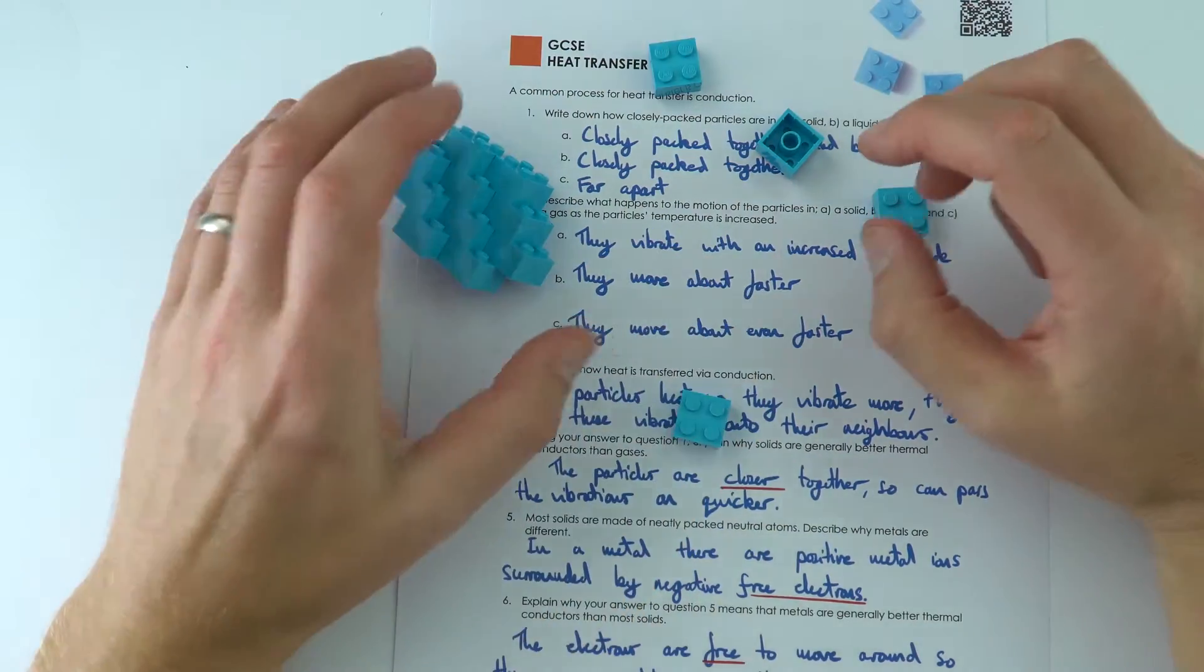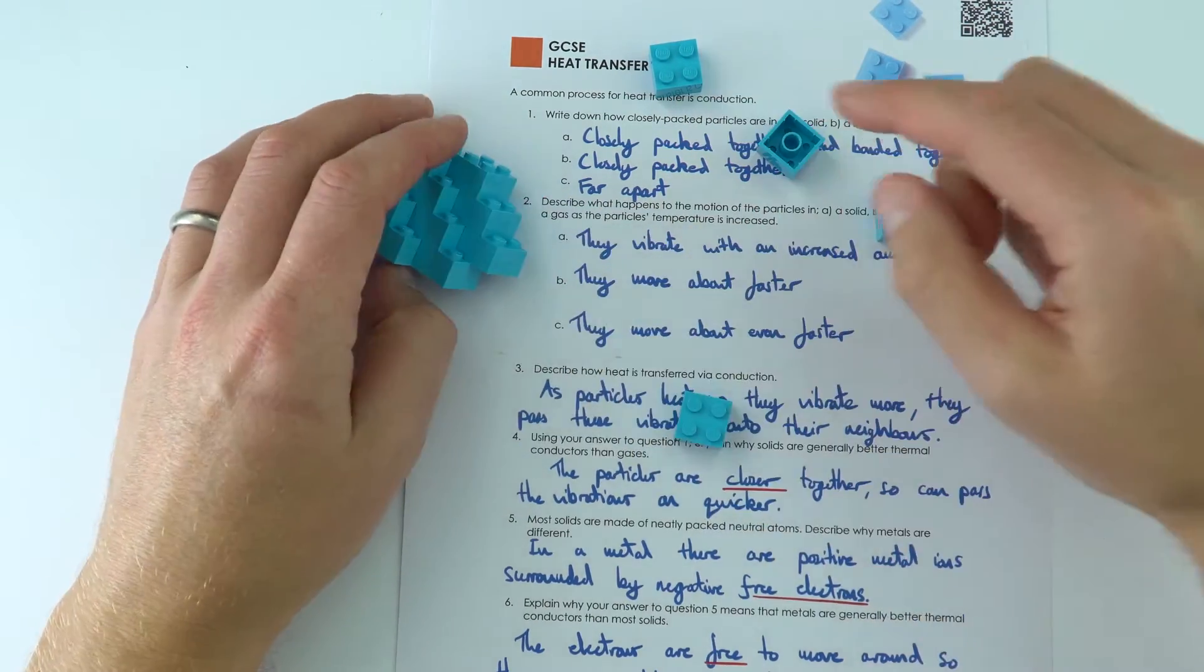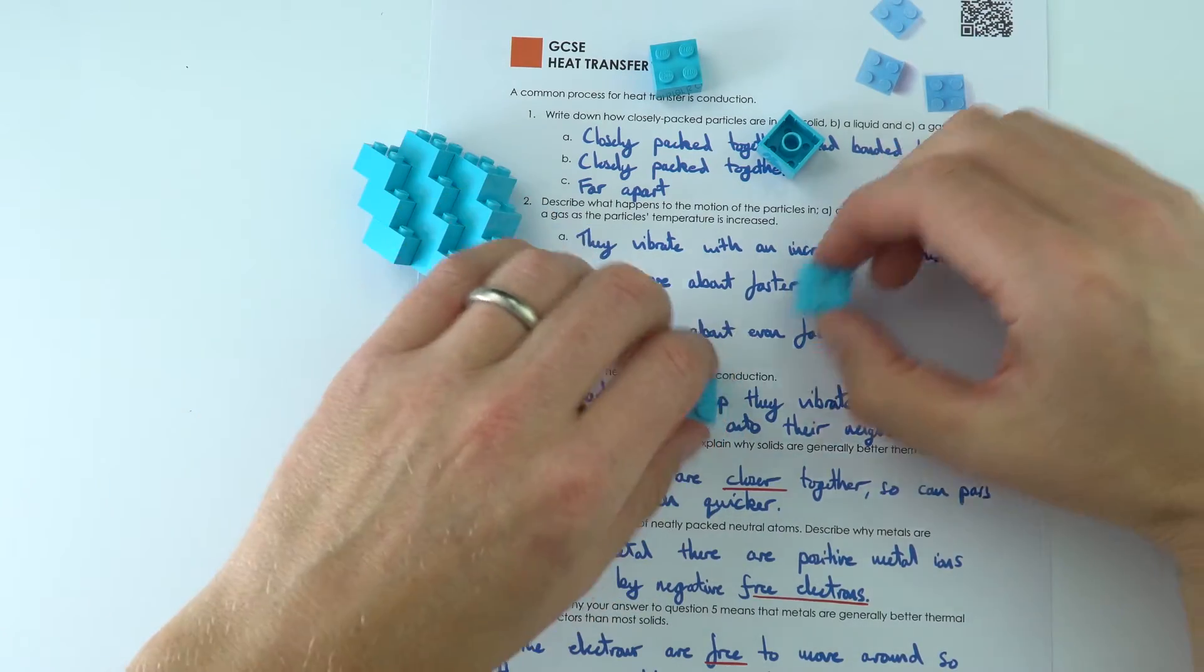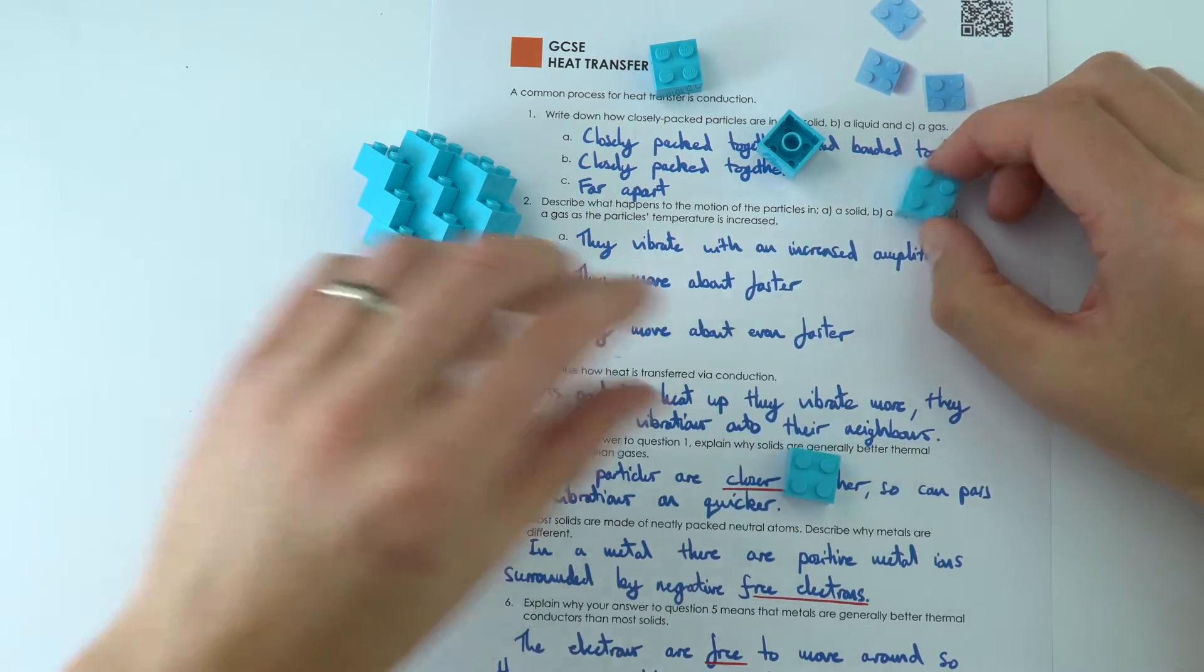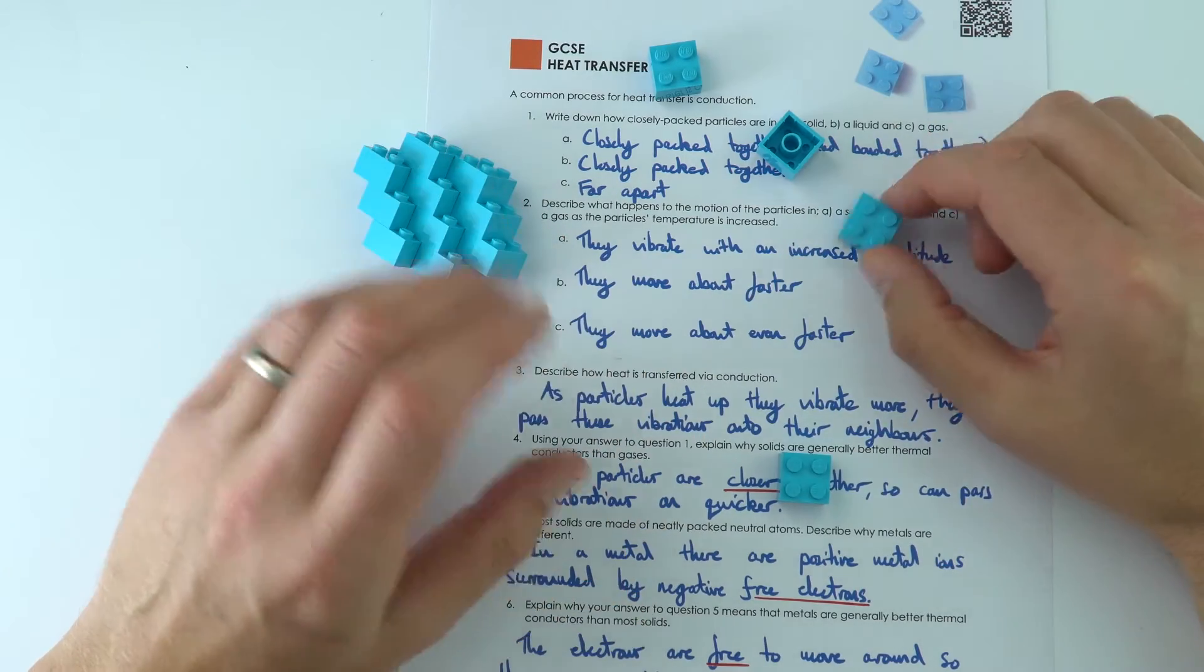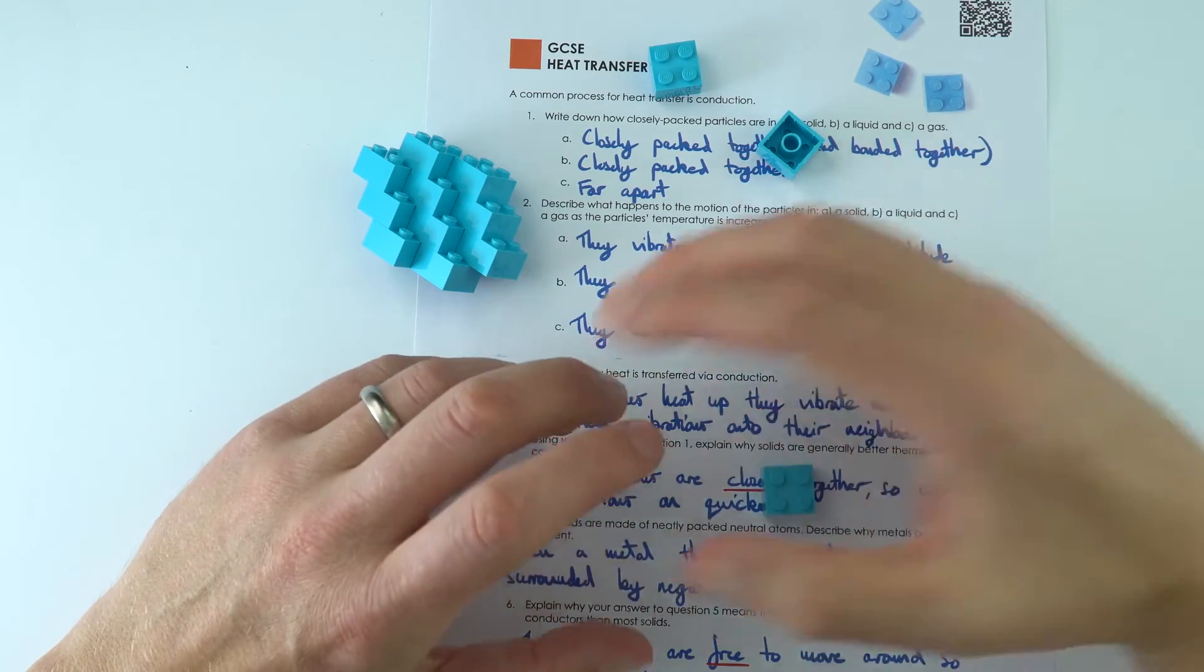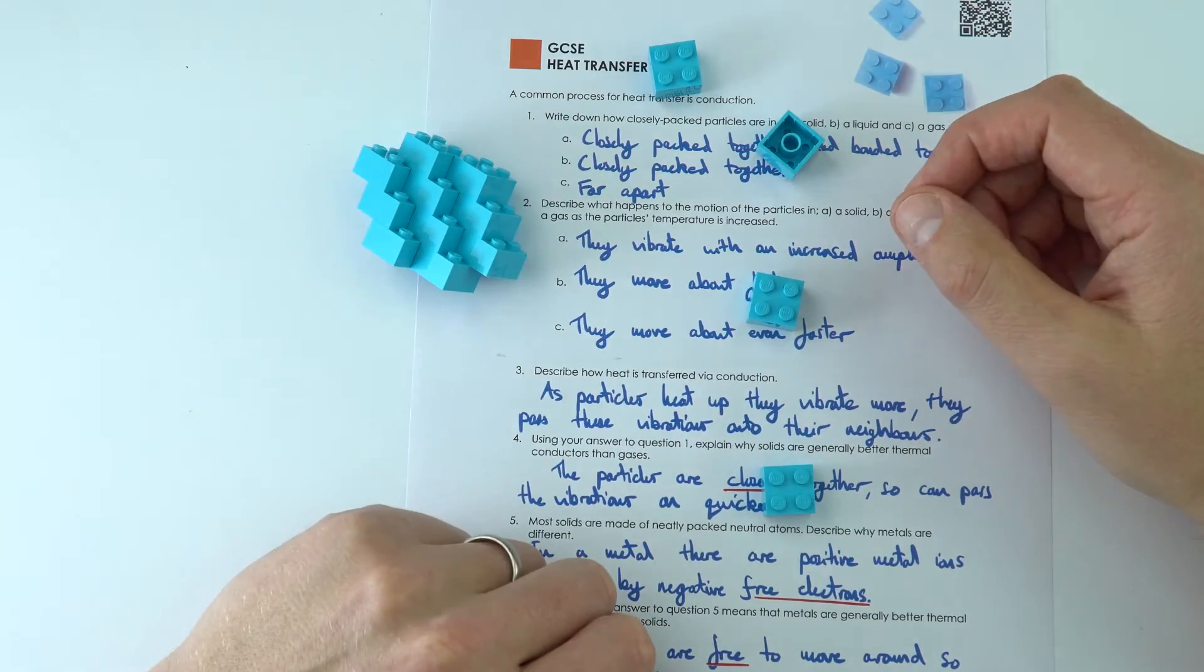And what we find is that when you increase the temperature of something, in a solid they vibrate more about a fixed position, in a liquid they move faster, and in the gas they travel around even faster, which often means that when they collide with the containers of that vessel, they're travelling faster, so they're at a higher pressure. So as you increase the temperature, we often increase the pressure of that gas.